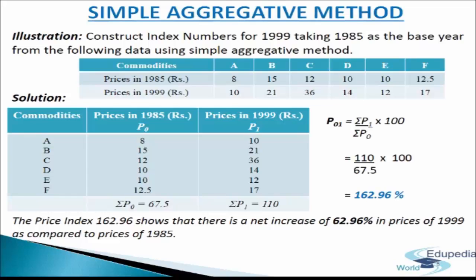For the solution, we make a table of three columns. The first column lists commodities A, B, C, D, E, and F. The second column lists prices in 1985 (P0): 8, 15, 12, 10, 10, and 12.5 — giving Sigma P0 = Rs 67.5. The third column lists prices in 1999 (P1): 10, 21, 36, 14, 12, and 70 — giving Sigma P1 = Rs 110.